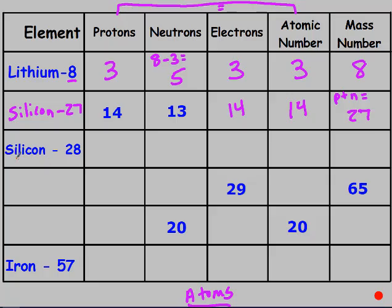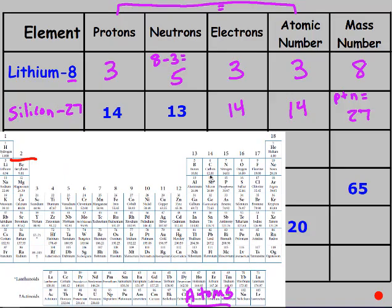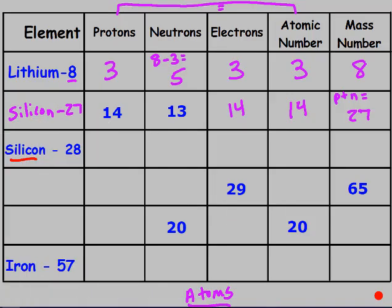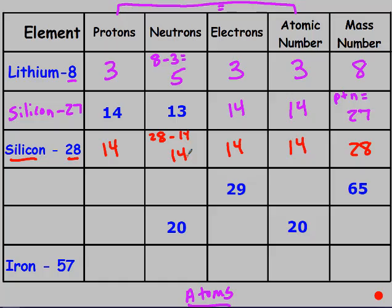The next row was also silicon, with atomic number 14, so 14 protons and 14 electrons. The mass number given is 28, and neutrons = 28 minus 14 = 14. Notice these are both silicon isotopes — the only difference is the number of neutrons and the mass number.